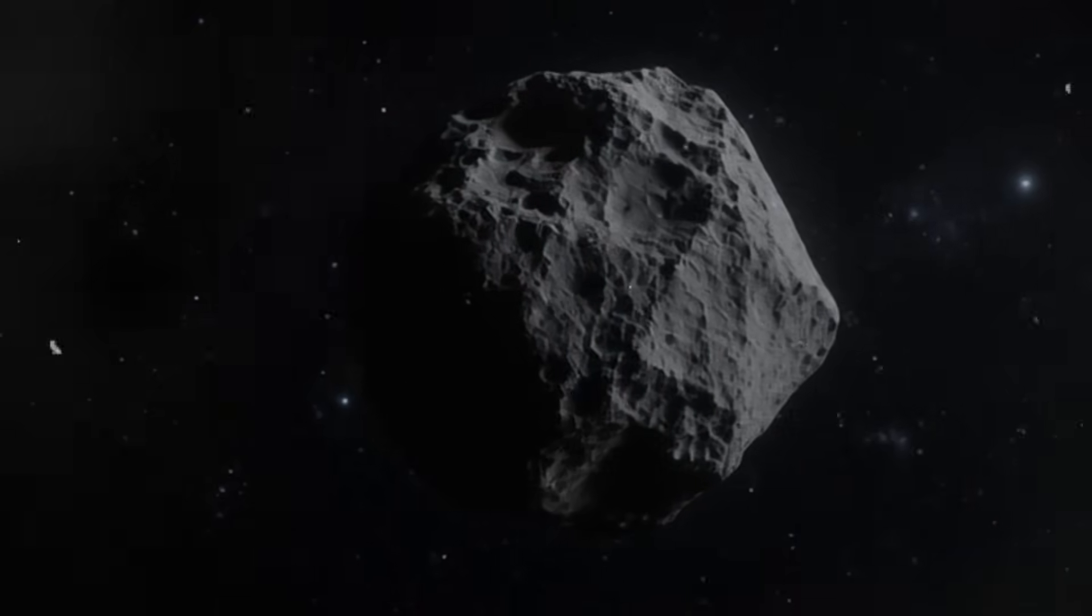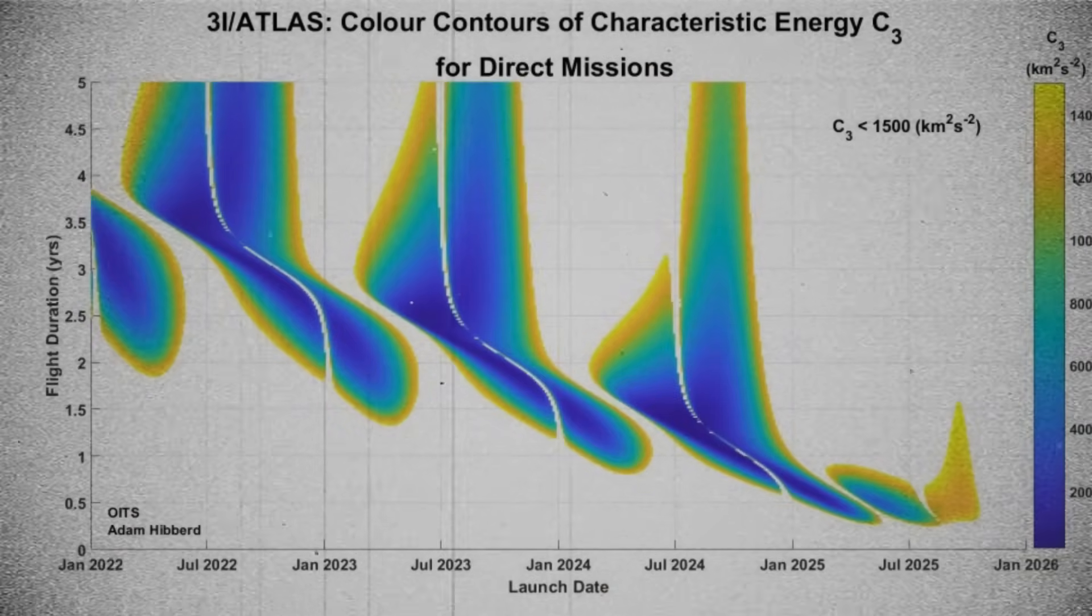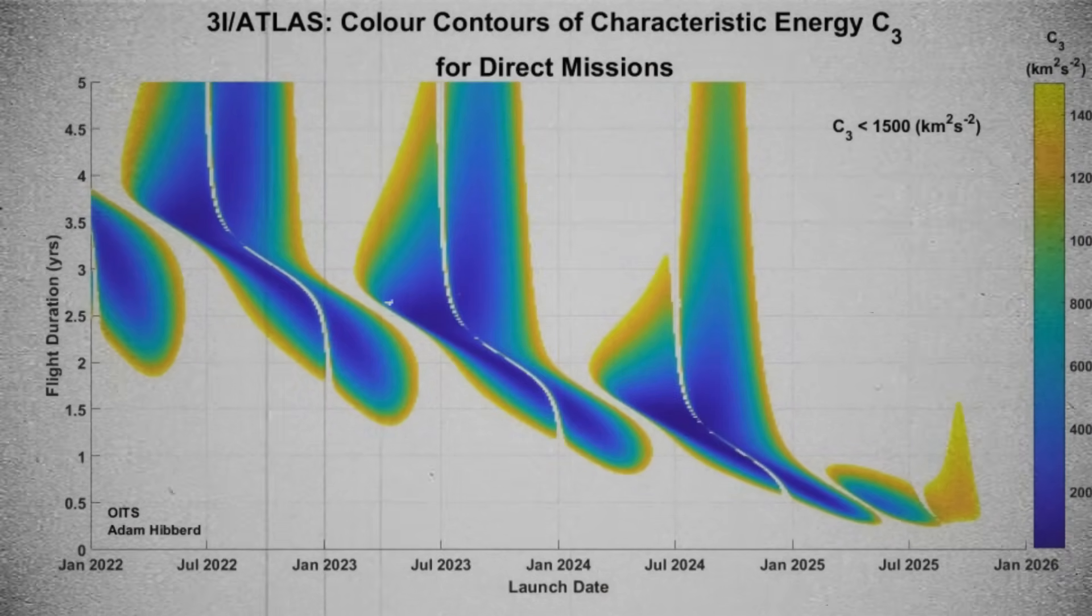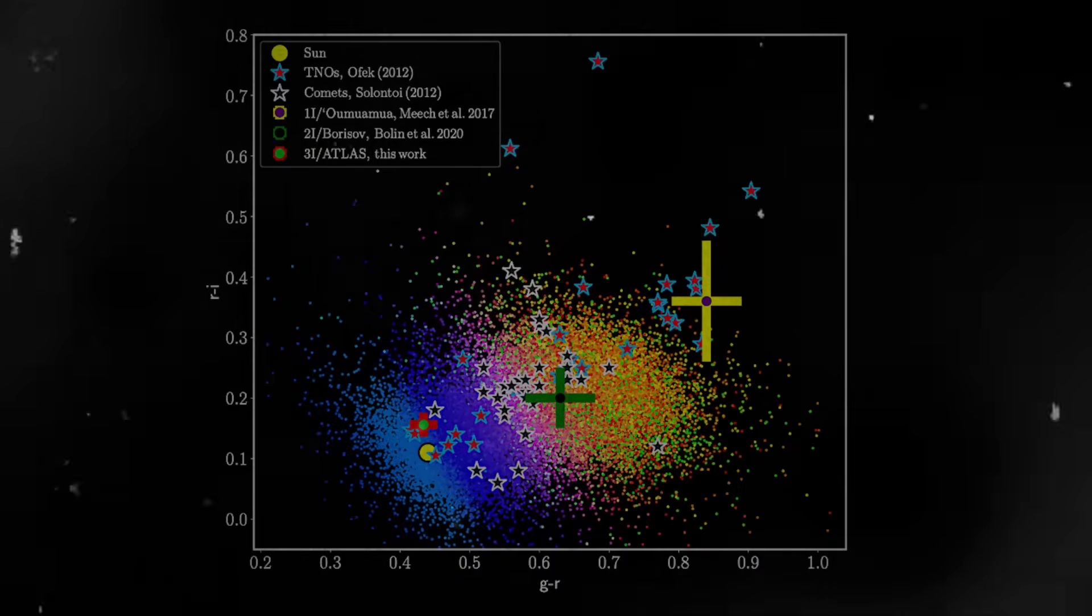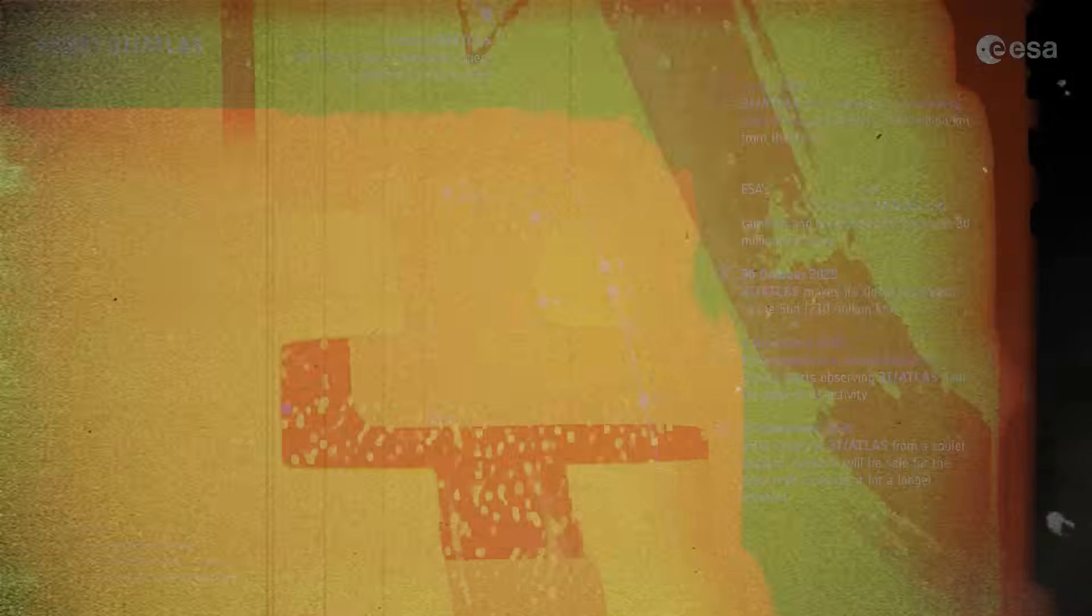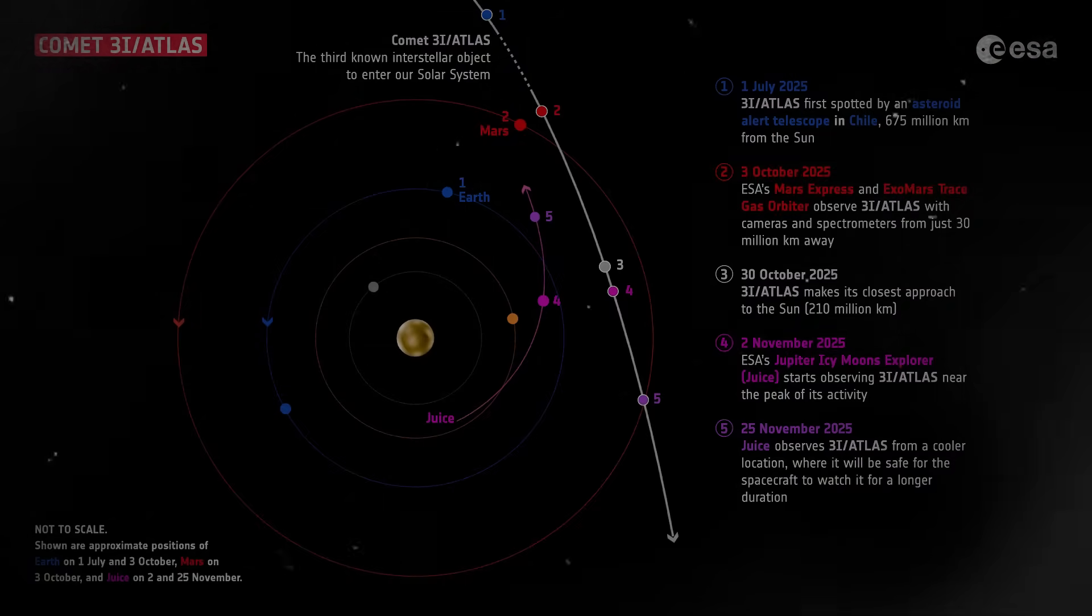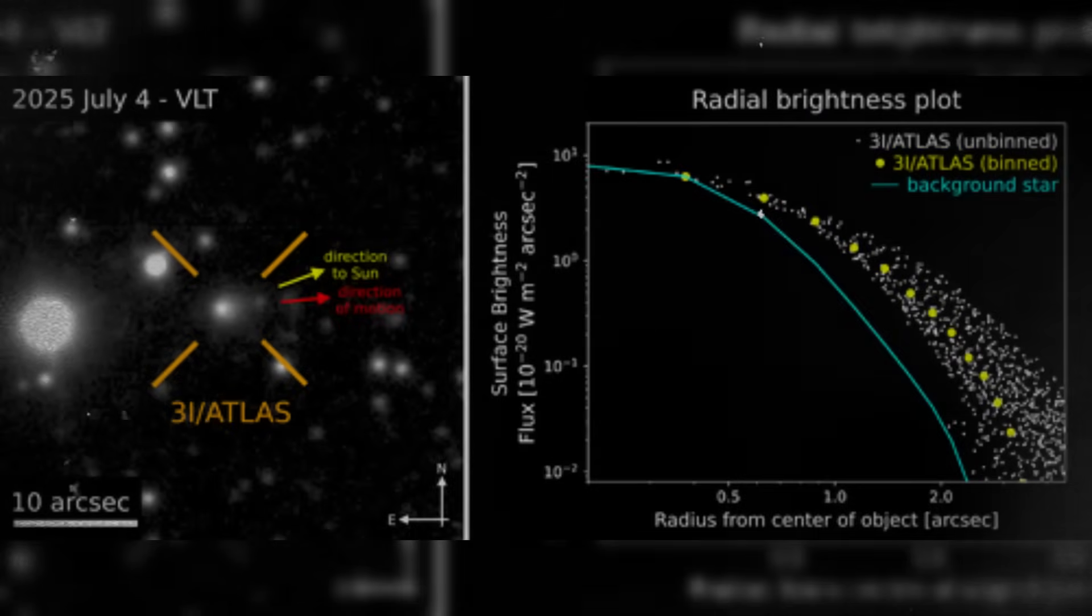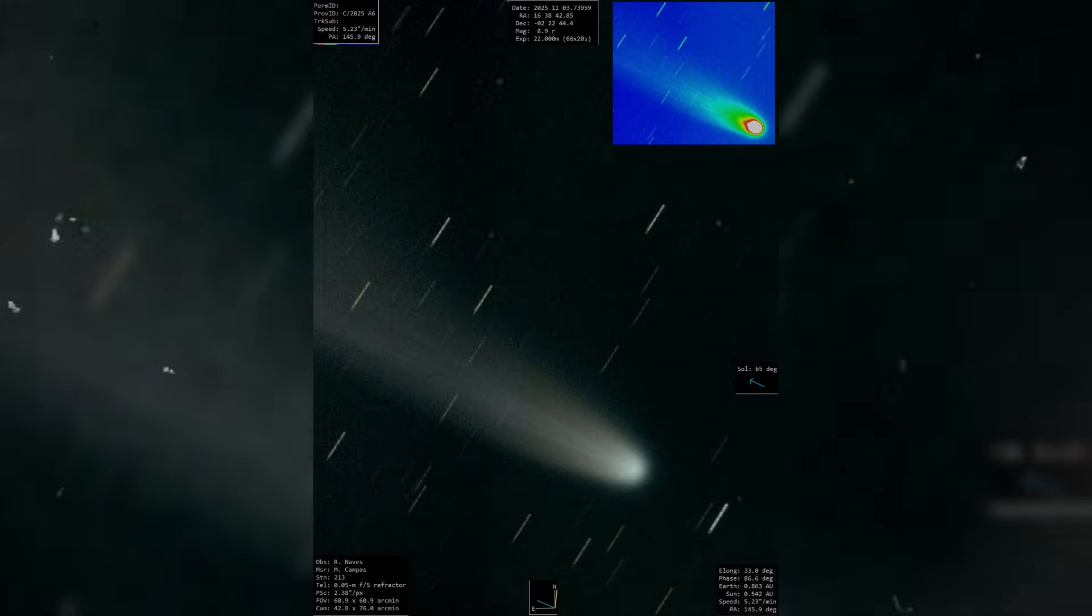The color evolution of 3i Atlas has become one of the most discussed aspects of its journey. Not because color changes are rare, but because the pattern it follows does not resemble any natural progression observed in similar deep space objects. When Atlas was first observed earlier this year, it reflected mostly red-shifted wavelengths. This is typical. Dust clouds surrounding comets tend to scatter red light more efficiently, especially when the coma is dense with heavy particles. For a moment, Atlas looked entirely ordinary. That changed rapidly.